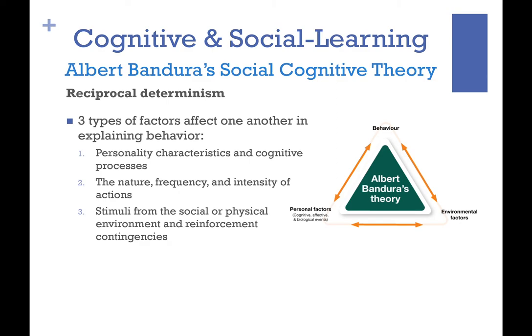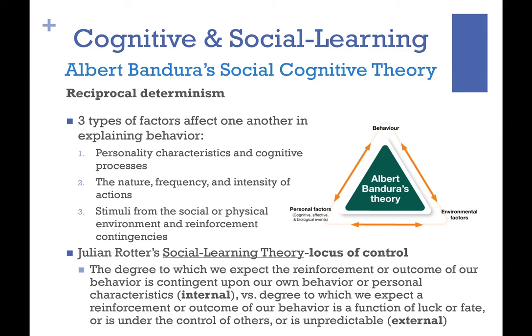According to social cognitive theory, three factors interact: personality characteristics and cognitive processes — thought processes and behaviors; the nature, frequency, and intensity of your actions; and stimuli from your environment, such as whether you have a negative model at home driving your behavior.